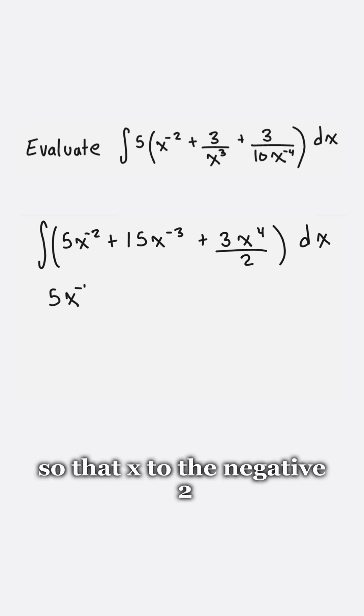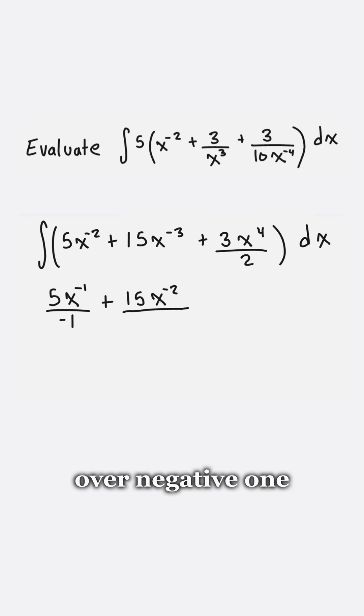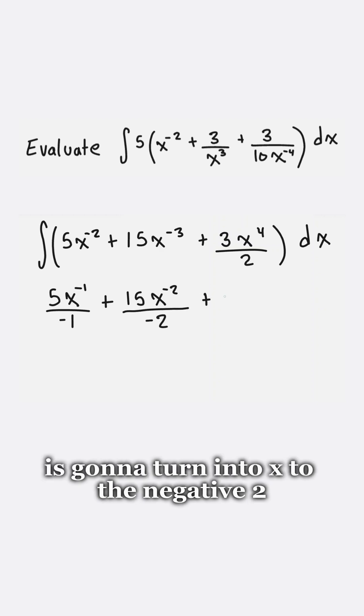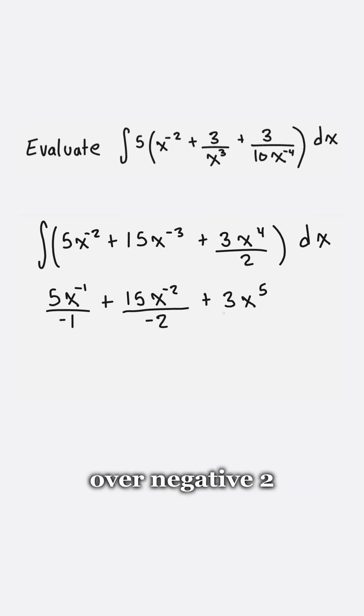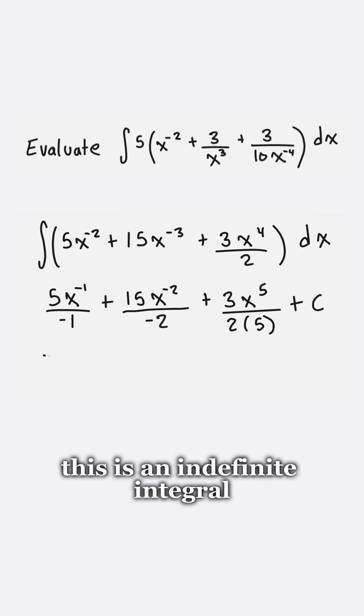So that x to the negative two, that's gonna turn into x to the negative one over negative one. X to the negative three is gonna turn into x to the negative two over negative two. And x to the four is gonna turn into x to the five over five. This is an indefinite integral,